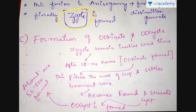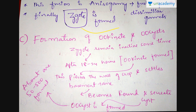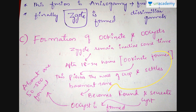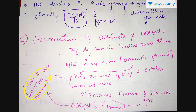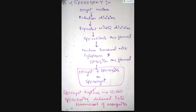The next stage leads to the formation of ookinetes and oocysts. The preformed zygote remains intact for some time. After 18 to 24 hours, the zygote forms an ookinete. This ookinete pierces the wall of the crop and settles at the basement membrane of the mosquito. After settling in the basement membrane, the ookinete becomes round and secretes cysts around itself. This structure is called an oocyst. About 50 to 500 oocysts are formed at this stage.